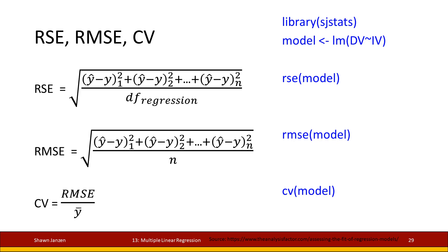RMSE — root mean square error — has that exact same formula as RSE. However, instead of using degrees of freedom, we're using N, which is the full sample size. If you take all values, add them together, and divide by N, that's an average, or the mean. So this is the root of the mean squared error. The difference between RSE and RMSE is small but conceptual.